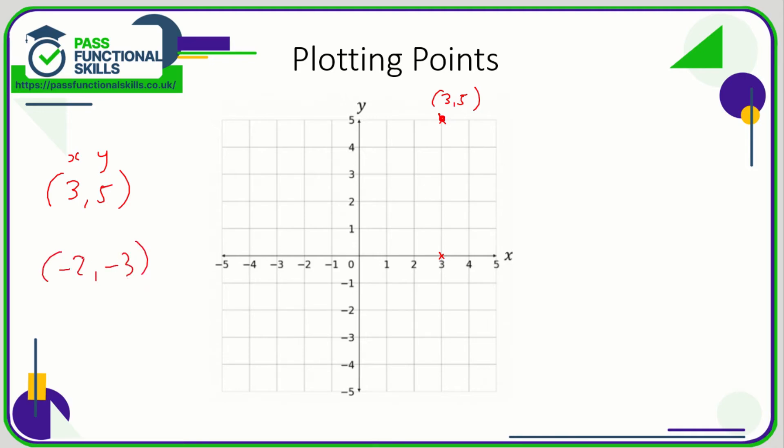If we had the point (-2, -3), then we need to go across to -2 and then down to -3. So this point here is the coordinate (-2, -3). If you had the coordinates (4, -5), we're going across to 4 and then down to -5. So this is the point (4, -5).